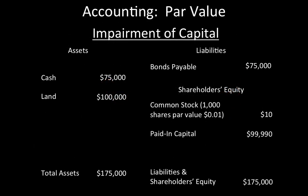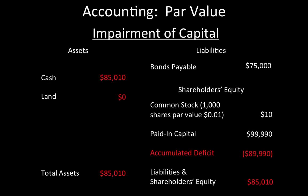This company has $175,000 in assets. If the land were sold for only $10,010, its assets would be reduced to $85,010. The retained earnings account would be negative to reflect the loss of $89,990 — this is called an accumulated deficit, which you can think of as negative retained earnings. Between the paid-in capital and the accumulated deficit, there is $10,000 in shareholders' equity, plus another $10 in legal capital, bringing total shareholders' equity to $10,010.